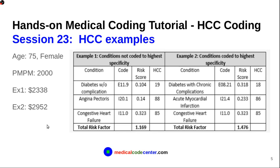Here is an example for HCC coding. This is a female patient, age 75. From those two demographic factors, we get a base risk score. From the patient's conditions, we also get HCC codes. For example, if diabetes is not coded to the highest specificity — diabetes without complication, E11.9 — the HCC code is 19 with a risk score of 0.104. But if you code more specifically — diabetes with chronic complication, E08.21 — the HCC code is 18 with a slightly higher risk score of 0.318.